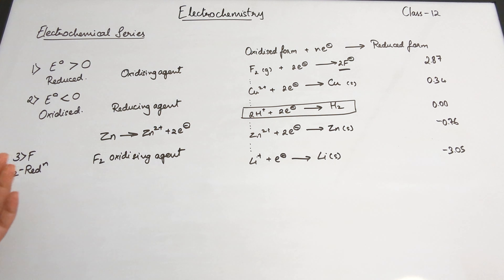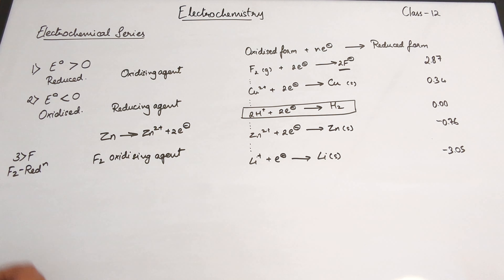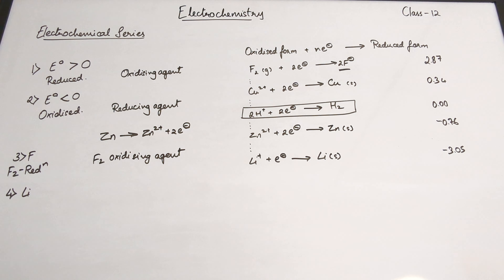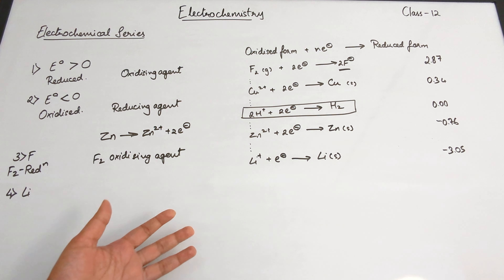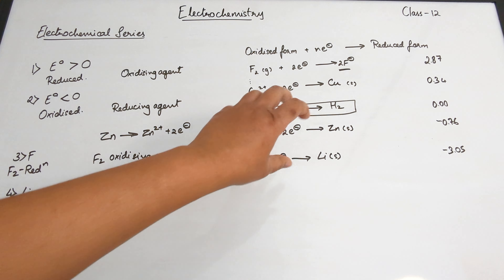The negative sign of minus 0.76 implies that the opposite reaction — that is, Zn giving rise to Zn²⁺ plus two electrons — is more preferable. Zinc finds the Zn²⁺ ion form more stable than the zinc metal itself, so it tends to undergo the process of oxidation, making it a very good reducing agent.